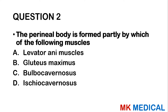Question 2: The perineal body is formed partly by which of the following muscles? A — levator ani muscles. B — gluteus maximus. C — bulbocavernosus. D — ischiocavernosus. This is an anatomy question where you either know it or you don't. The answer is C, the bulbocavernosus.